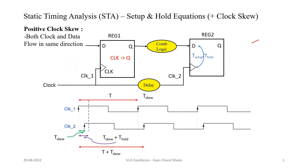Here we are going to take the positive clock skew. First let's understand what positive clock skew is. As you already know, this is our launch flop and this is our capture flop. The data is always launched by the launch flop and it is captured later in one clock cycle by the capture flip flop.